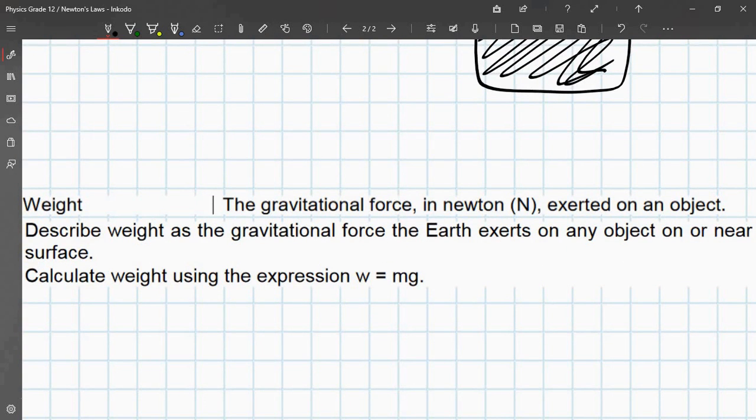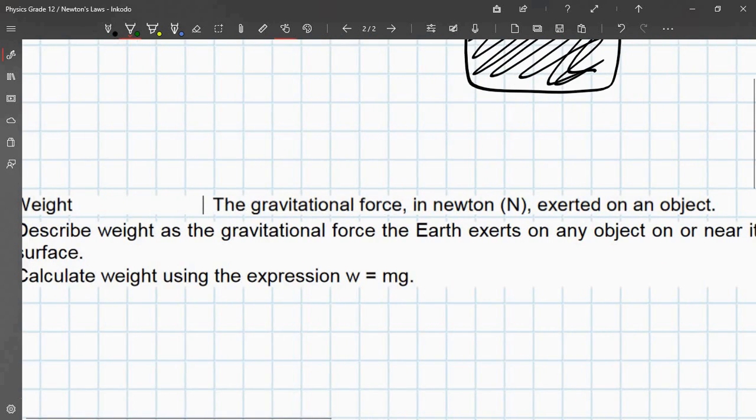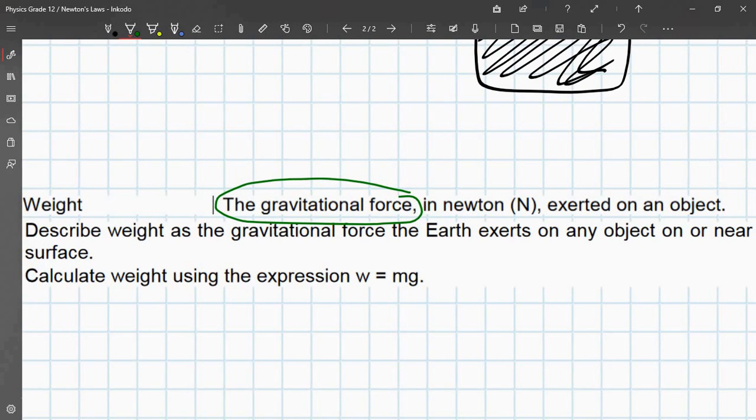Weight, on the other hand, is the gravitational force in Newtons exerted on an object. So, this here, the gravitational force, gravitational force can change depending on the planet you are on. Now, the definition that can be given if it's on earth, we can describe, we say, weight can be described as the gravitational force the earth exerts on any object near its surface. And it is calculated using the formula,